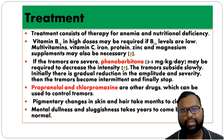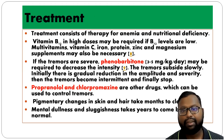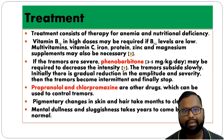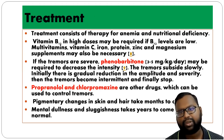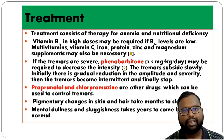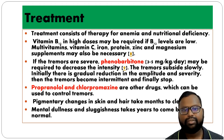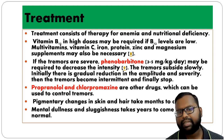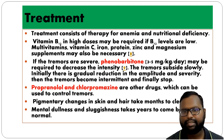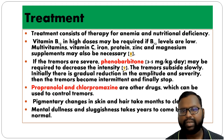The treatment is mostly supportive. We have to treat anemia and supplement multiple nutrients including vitamin B12, multivitamins, vitamin C, iron, protein, zinc, and magnesium. For tremor, phenobarbitone is used. Other options include propranolol and chlorpromazine. Pigmentary changes in hair and skin typically take months to clear, while mental alertness and development may take years to become normal.